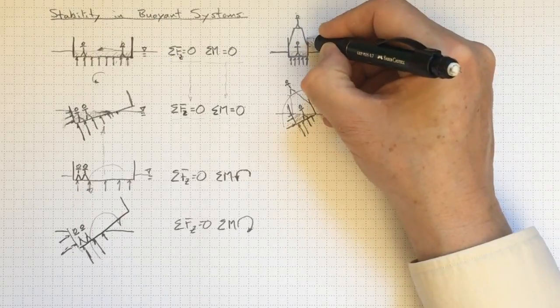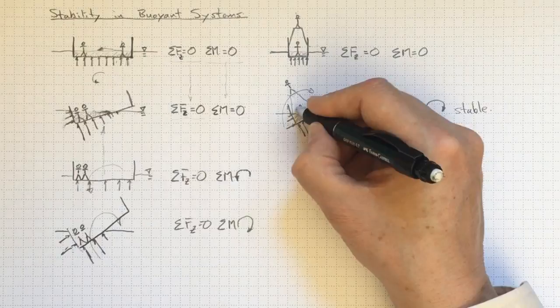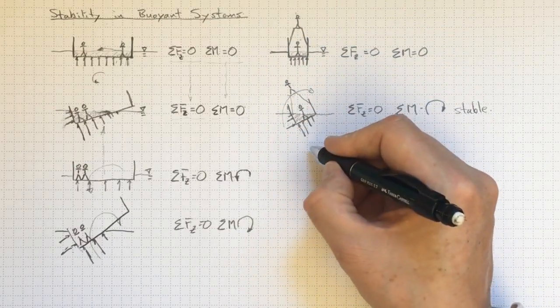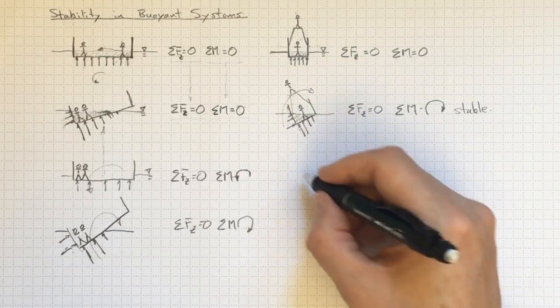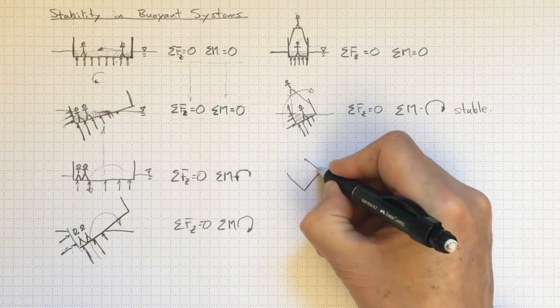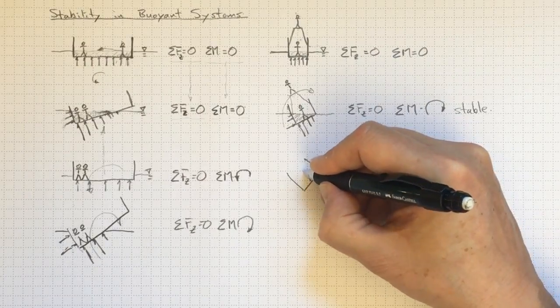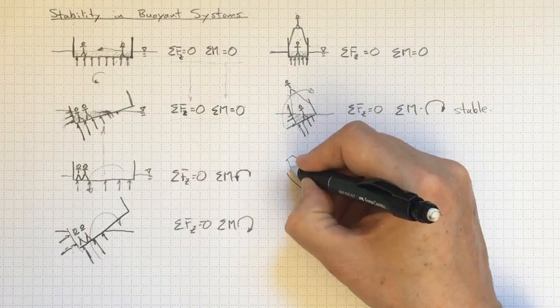So here in this configuration, if I move over that way a little bit, I've got a stable system. It moves back towards the center. On the other hand, if I tip the boat over a little further, let's go to something like this. And we'll assume I'm still standing here by some kind of magic. And you're still up on the fly bridge.